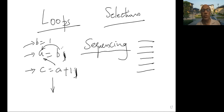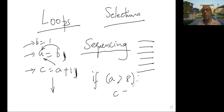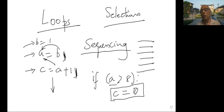Then we talked about selections — that is, you don't want to execute every line in the program. You execute a line conditionally. So you decide whether a is greater than 8, and if so, you might write c equals 10. So you have this line in your program, but you are deciding in the middle of execution whether that should be executed or not. That was selection.